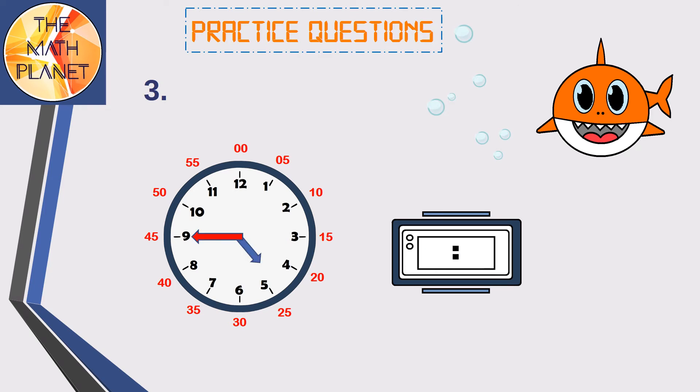Question 3. The hour's hand is between 4 and 5, so it is still 4 o'clock. The minute's hand points to 9, so it is 4 and 45 minutes.